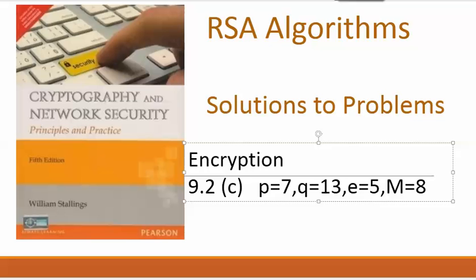Hi everyone, this is my another tutorial. We are solving RSA algorithm questions. This question is from the 5th edition of Cryptography and Network Security by William Stallings. We are given the values p=7, q=13, e=5, and M=8, where M is the plaintext.